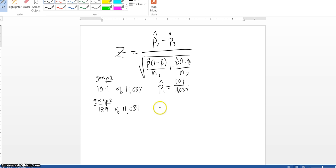Our P2 hat is going to be the number who had heart attacks in group 2, 189, divided by the total number of men in group 2, 11,034.